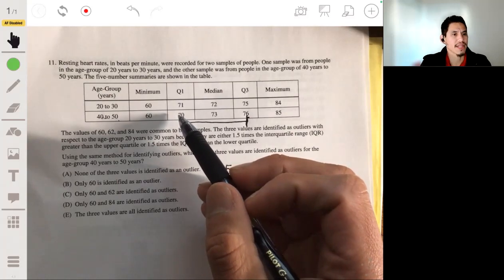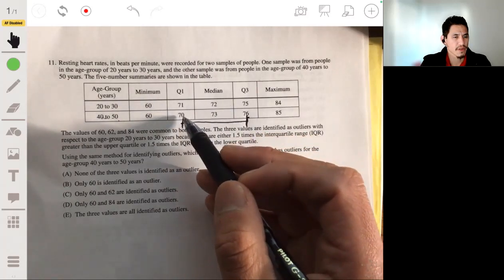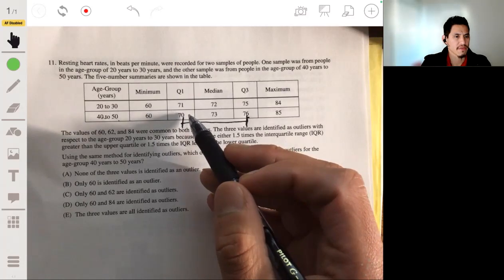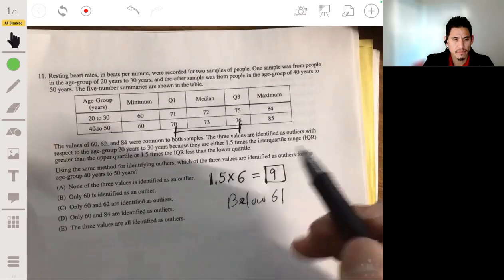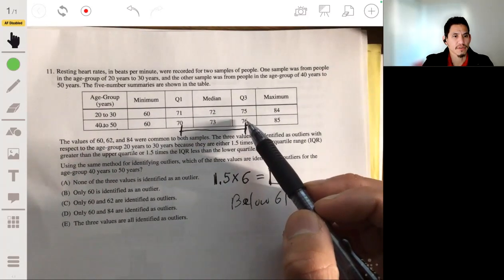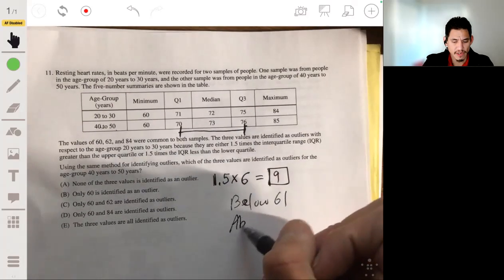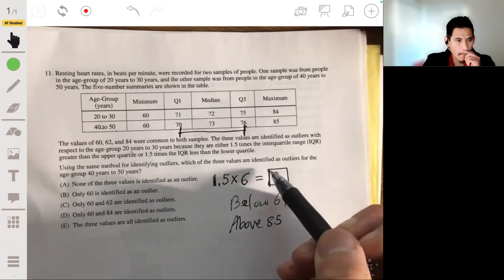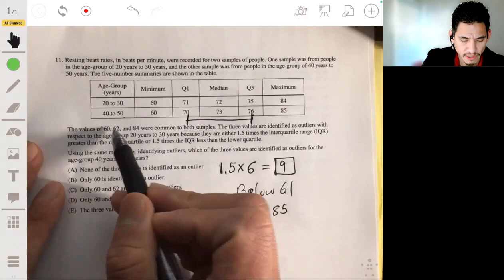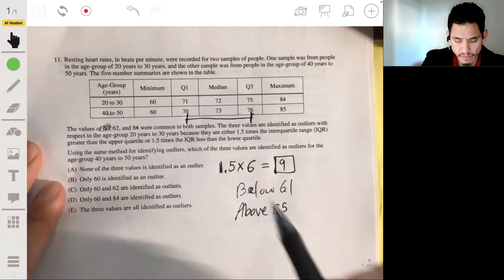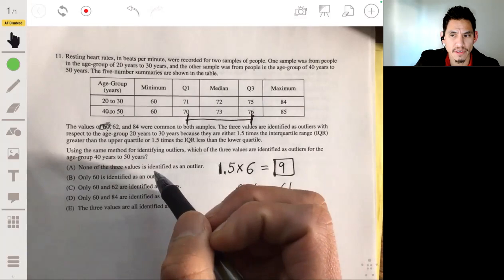So essentially, you want to see if there are values that are more than 9 units below Q1. So 70, so more than 9 below 70, so below 61, that'll be your lower bound, and more than 9 units above Q3. So 76 plus 9 would be 85, so above 85. Okay, so 60 counts for below 61, of course, so we got one outlier, and nothing else. All we have is one outlier 60. And so the answer would then be B.